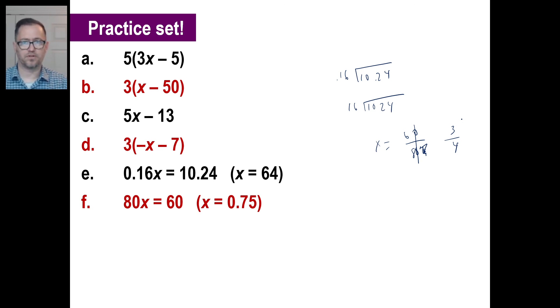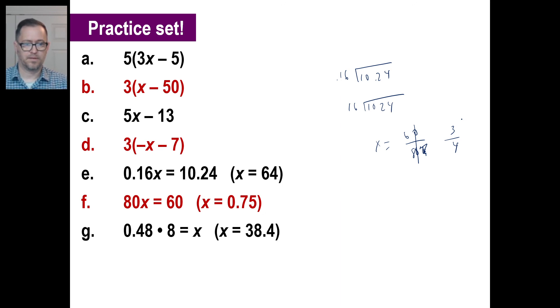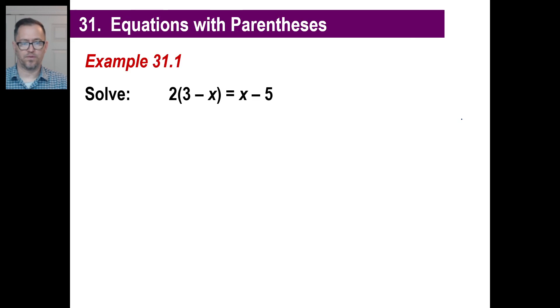Pause it and try G. There's your setup for G: 0.48 times 8 equals X, so X equals 38.4.